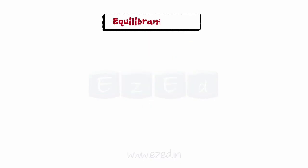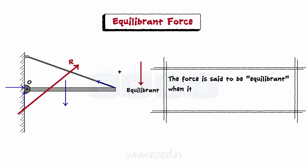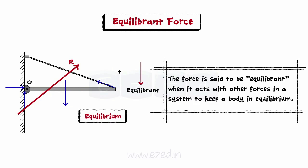Now let's learn about equilibrant force. An unbalanced force system, that is a system with a non-zero resultant, can be brought to a state of equilibrium by adding an equilibrant force into the system. A force is said to be equilibrant when it acts with other forces in a system to keep a body in equilibrium. In order to find the equilibrant of a force system, we first need to find the magnitude, direction and exact location of the resultant of the force system.